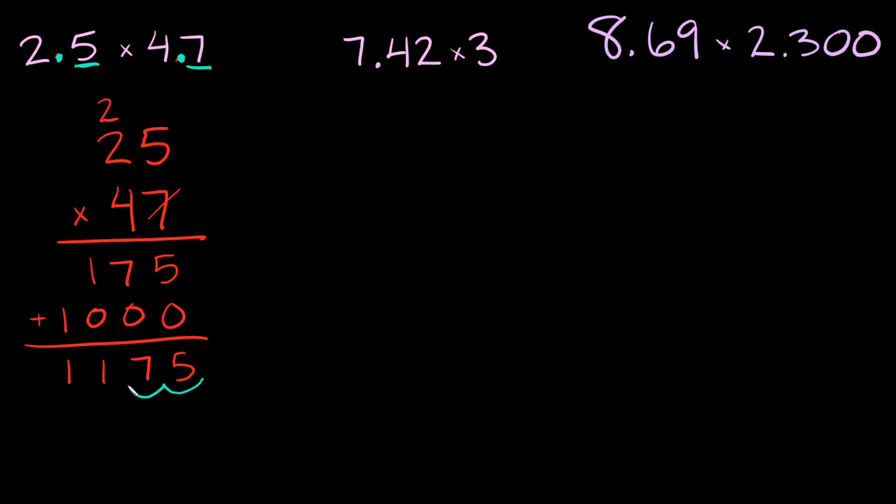1, 2. Boom. So that's where you put your decimal. And your answer would be 11.75. So what ends up happening is since we have two decimal numbers up here we also end up having two decimal numbers in our answer. So that always has to match up. That's an easy way to check your answer too. Now let's go on to the next example.